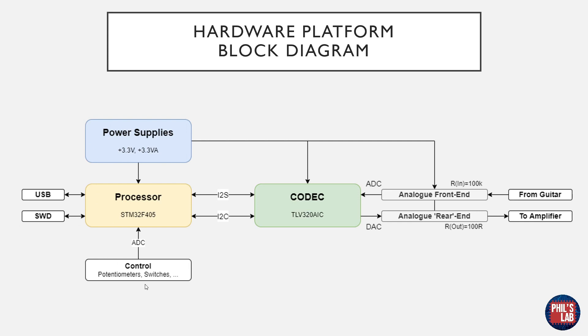Various controls so potentiometers and switches which are read in via the processor's ADC. We have this codec which are ADCs and DACs streaming the data via I2S. Then of course we need some sort of analog front ends basically as impedance conversion and anti-aliasing filters and we have a guitar input and an amplifier output.